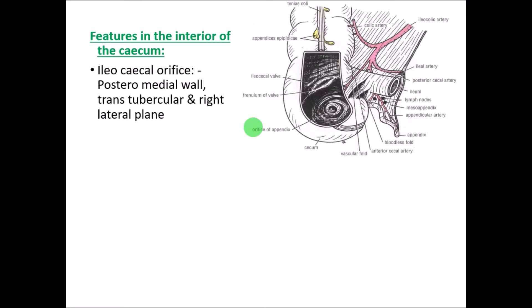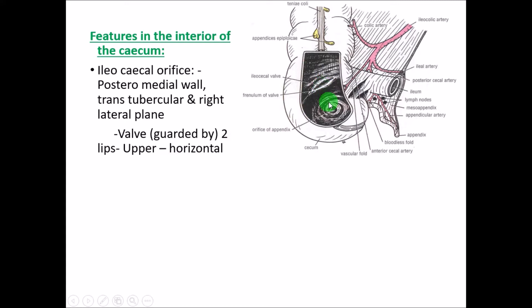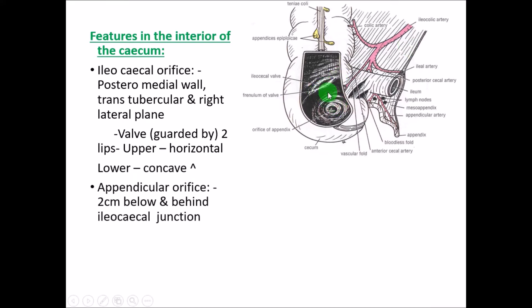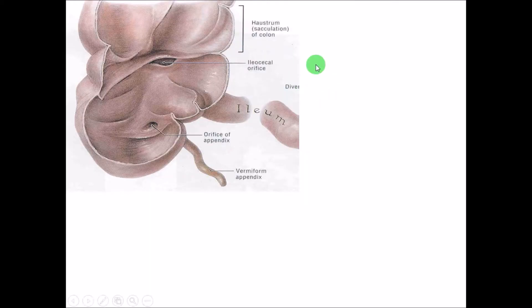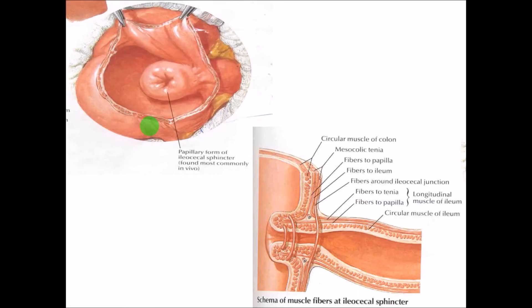Interior of the cecum: there are two openings. One is the ileocecal orifice, which opens on the posteromedial wall near the junction of the transtubercular and right lateral planes, guarded by a valve with two lips — upper horizontal and lower concave. The second is the appendicular orifice, almost 2 cm below the first opening, guarded by a valve called the valve of Gerlach. Around the ileocecal orifice there is a sphincter-like structure that acts as a sphincter.